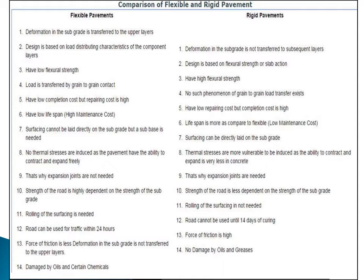The seventh and eighth points relate to thermal stresses. In flexible pavement, no thermal stresses are induced because the pavement has the ability to contract and expand freely. Bitumen as a binding material melts in heat and can be easily worked, and acts slightly rigid at low temperatures. In contrast, in rigid pavement, thermal stresses are more vulnerable because concrete has very limited ability to contract and expand, so thermal stresses must be considered during design.